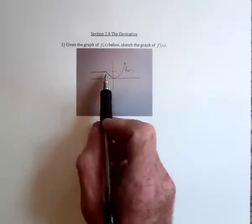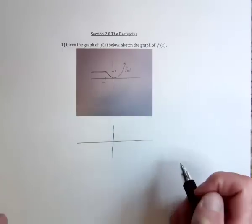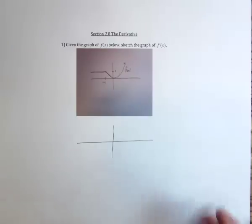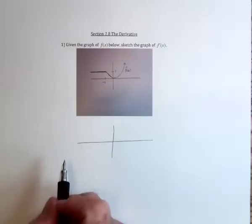So this is the graph of the original function, and now we need to graph what the derivative would look like. The derivative is all about the slope of the tangent line. To begin with, this is a horizontal line, and horizontal lines have a slope of zero.